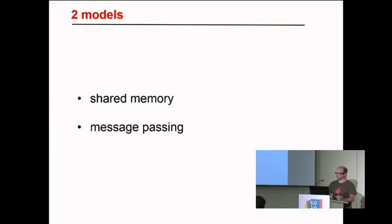The other way is message passing. You have two models: the actor model and the CSP model. This is mostly a way to say your code is running independently in a part of your process or on different processes on different machines, and you are passing data to them via message passing, so they can communicate and exchange data. Erlang and Scala are very well known for handling these models.